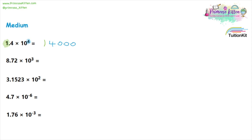So 1.4 times 10 to the 4 becomes 14,000. For 8.72 times 10 to the 3, we keep the 8 the same. After the 8 we're going to have three other numbers: the first of them is a 7, then a 2, and then our third number is going to be a 0. So 8.72 times 10 to the 3 becomes 8,720.